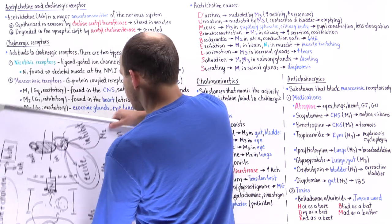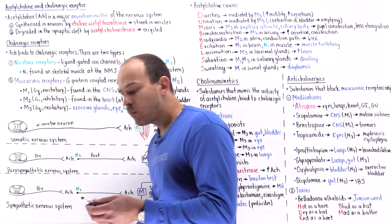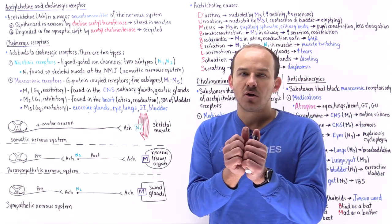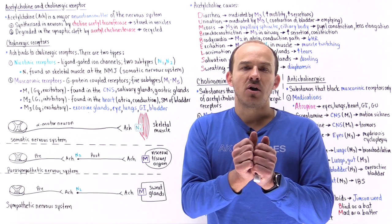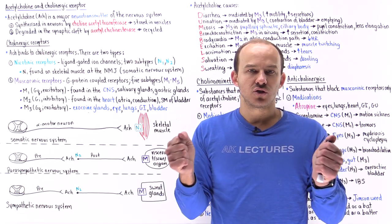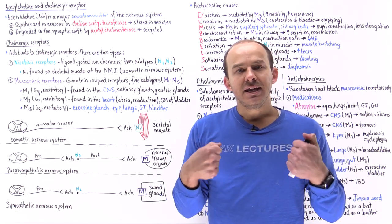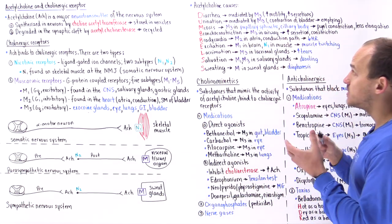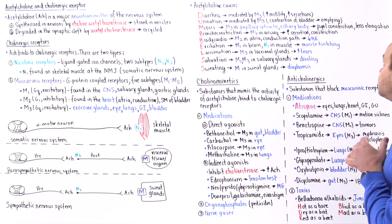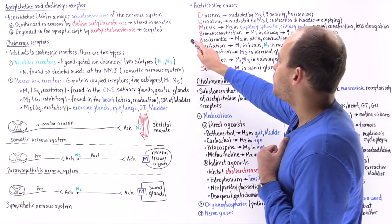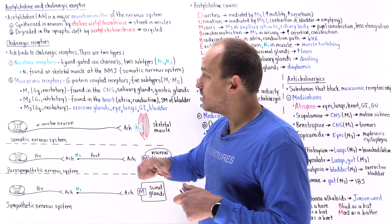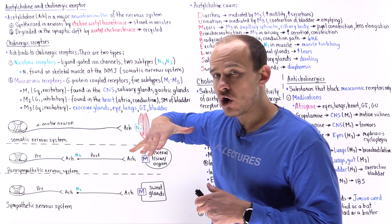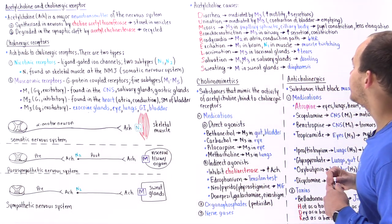The first B stands for bronchoconstriction. In the airways, we have M3s on the smooth muscle. When we activate them, that causes them to contract, causing bronchoconstriction. In addition, we increase airway secretions in the lungs and other areas of the airway. The second B stands for bradycardia. This is because of M2s — which are inhibitory — so we decrease the heart rate, which can cause bradycardia.